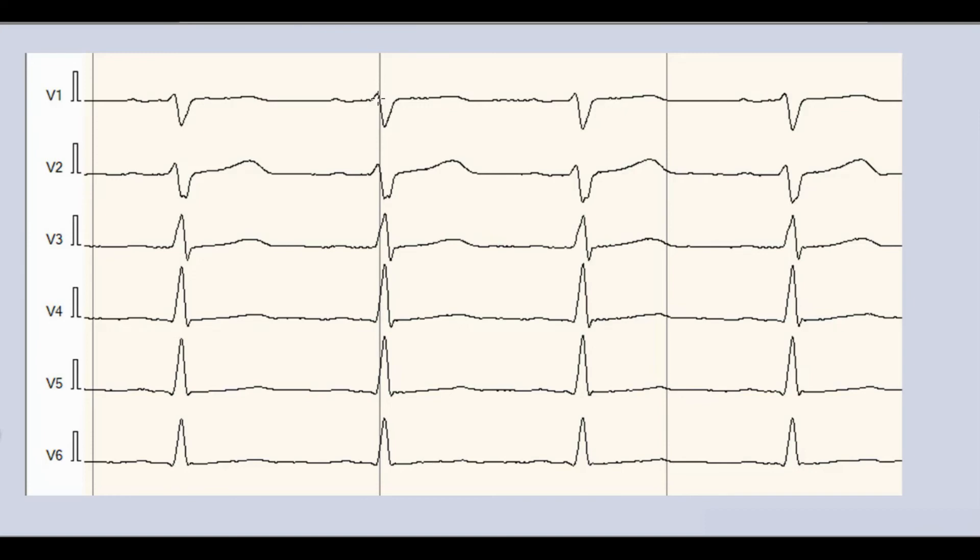In chest leads, S wave should gradually decrease in amplitude from V1 to V4 and has minimal amplitude in V5 and V6.